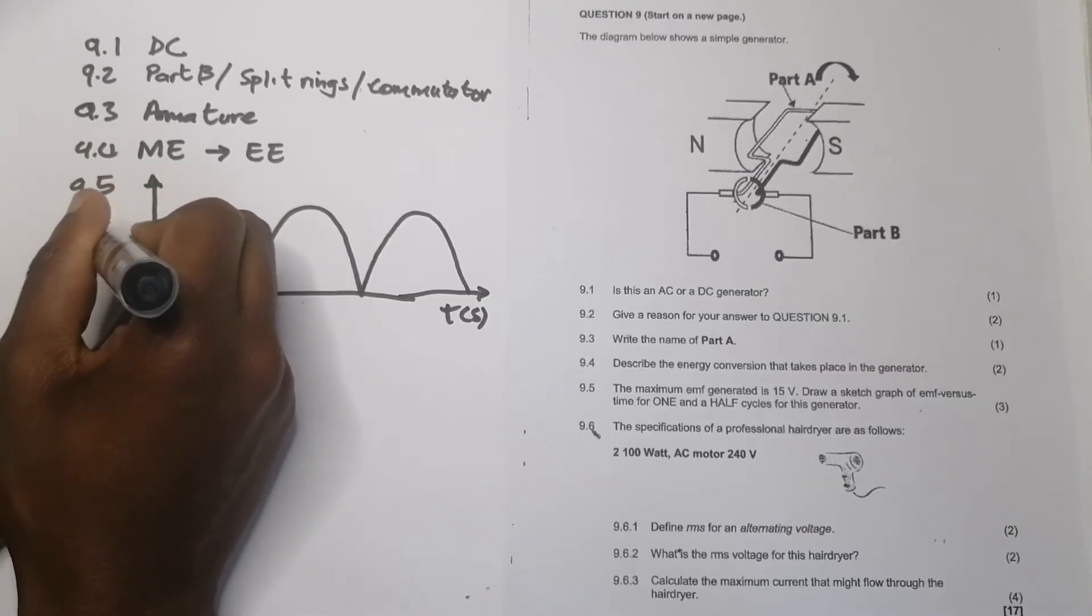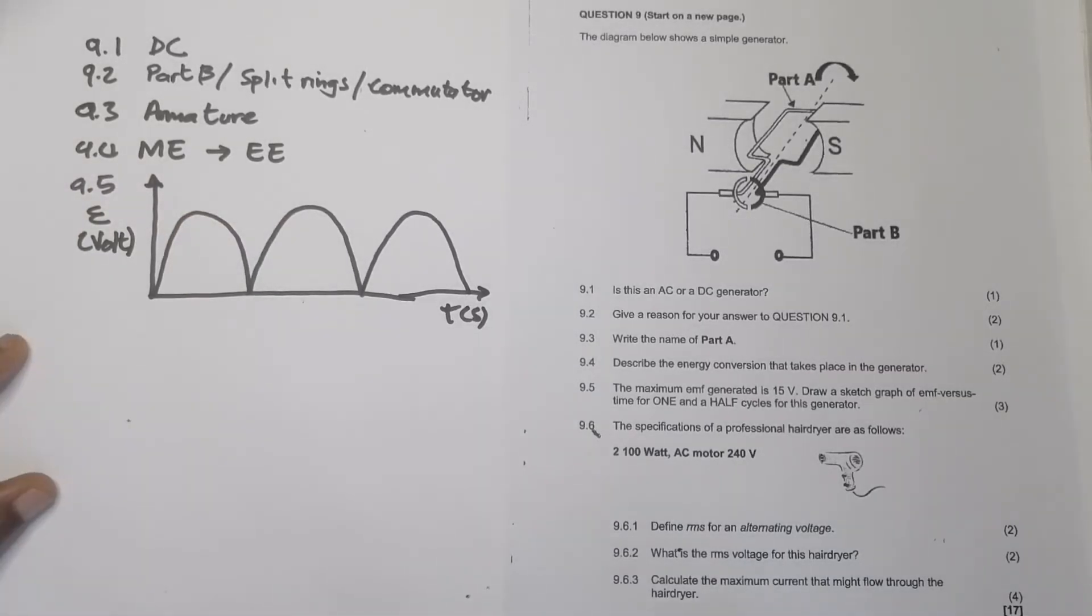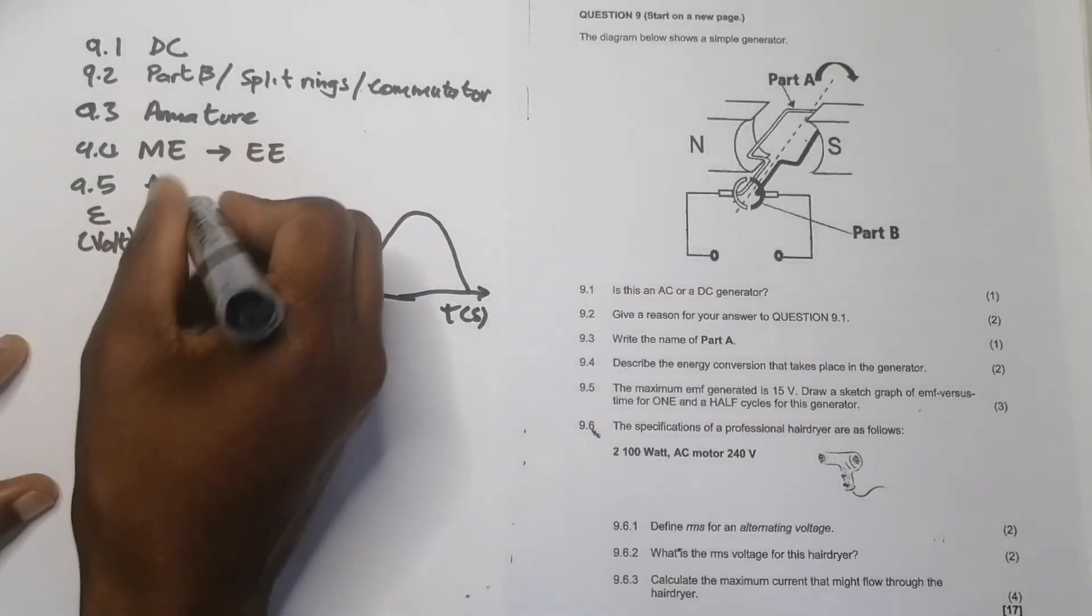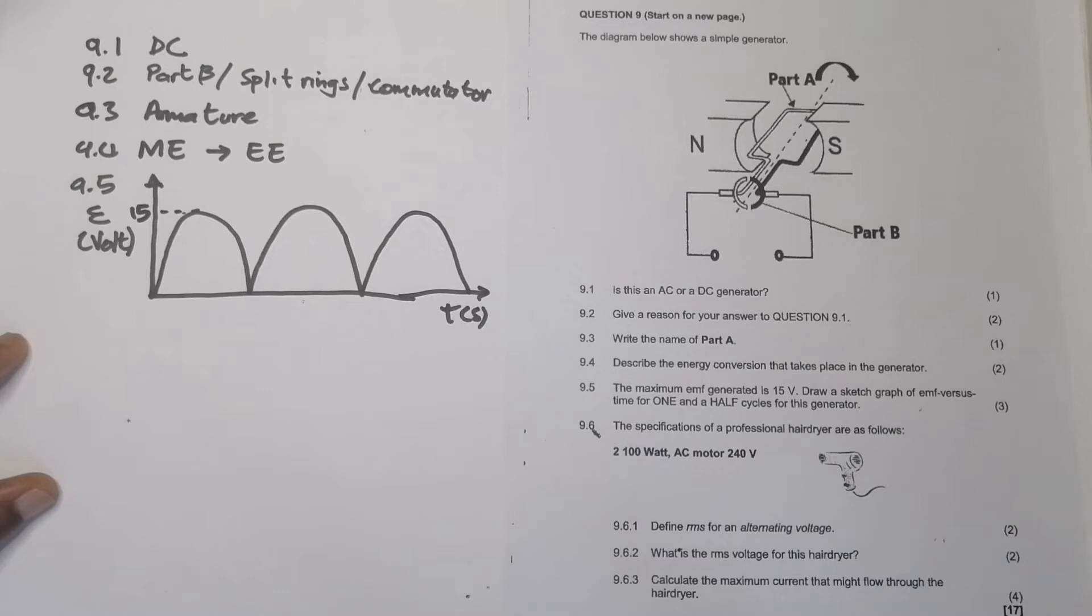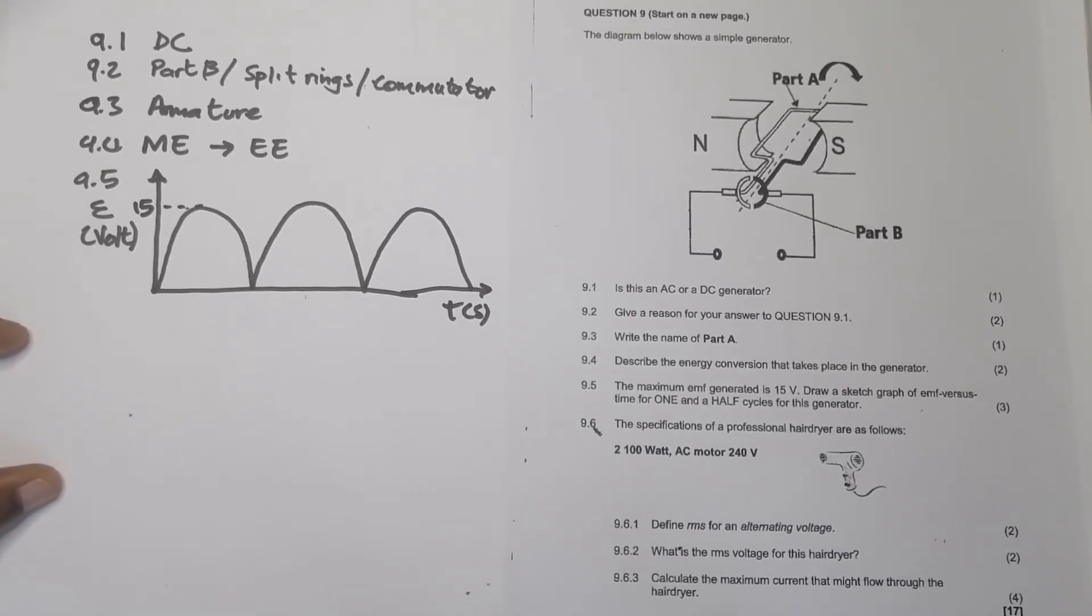So in this case, this would be the kind of graph that I'd have. This is time in seconds, this would be the voltage or the EMF in volts. They said maximum of 15, so I know that this maximum would be 15 over there.